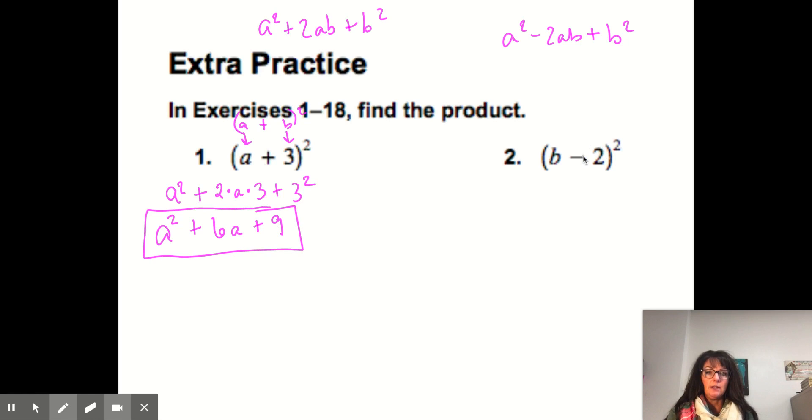Why don't you go ahead and pause the video to do number 2 and understand that the pattern will have subtraction. And then I'll go ahead and work it out. So I see the first term is b² and then minus the 2 times b times 2 plus 2². So b² - 4b + 4 should have been what you got.